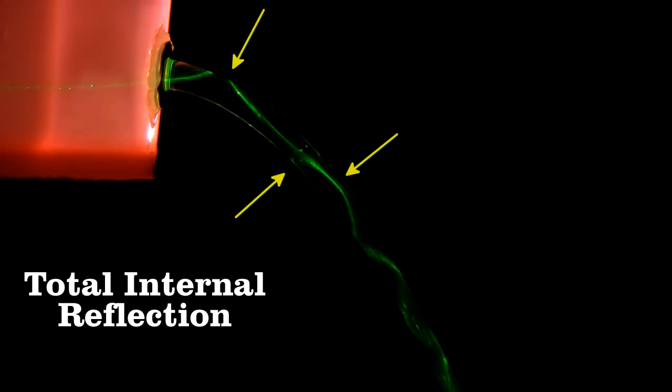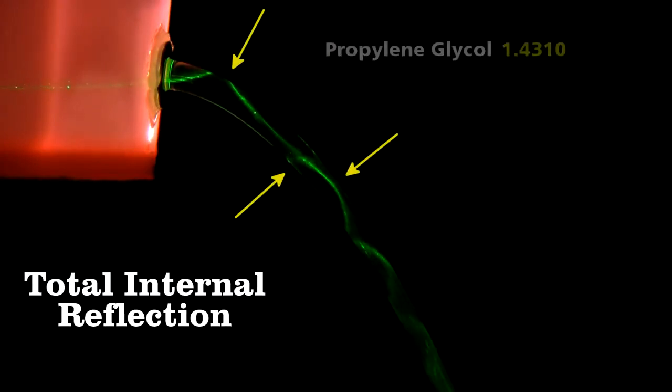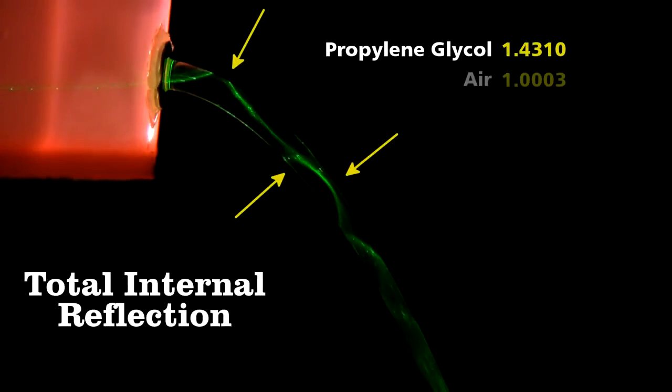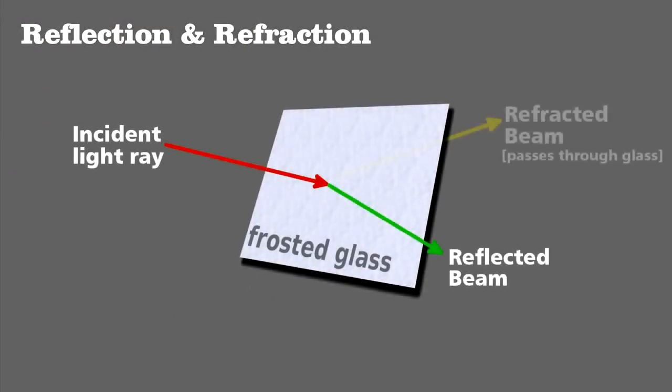This occurs because there's a difference between the index of refraction of the guide material, here propylene glycol, and the outside, air in this case. Recall that any time light strikes a surface, it can either be absorbed by the material, reflected from it, or pass into and through it.